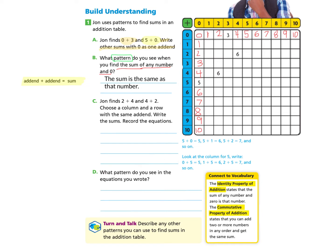So now we can move on to part C. John finds 2 plus 4 and 4 plus 2, and he writes them here. That's 2 plus 4, and he writes that here 6. And then he also finds that 4 plus 2 makes 6, and he writes that in as well. Choose a column or a row. So remember, rows go this way and the columns go up and down.